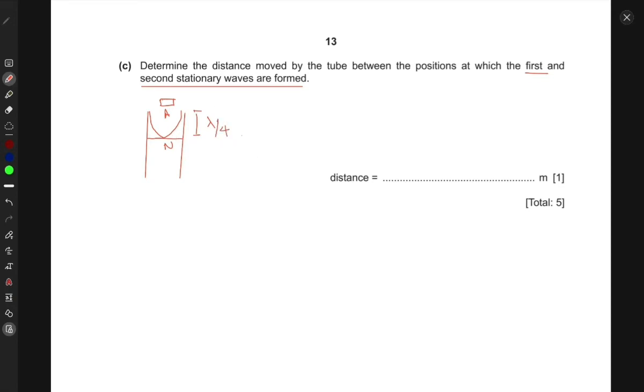However, for the second wave to be formed, if this is the loudspeaker, the second stationary wave is formed something like this. These are the two nodes we see: here we have a node, here we have a node, and here we have an antinode and here an antinode.